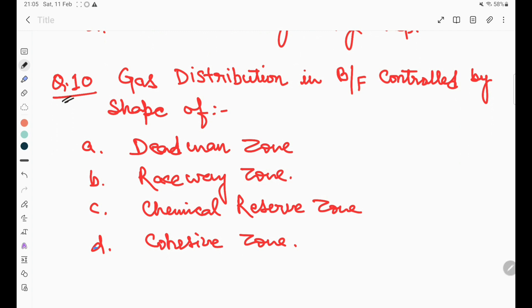In question number ten, gas distribution in blast furnace is controlled by the shape of cohesive zone. This is the correct option, which is the right answer.